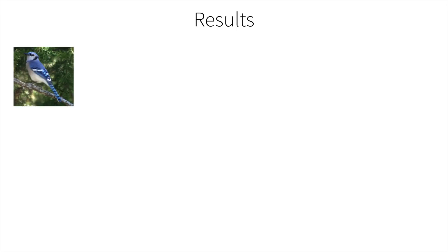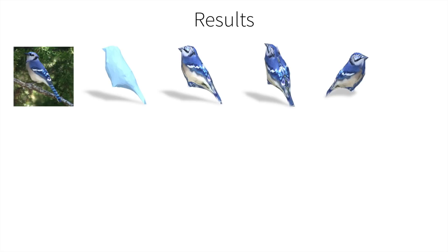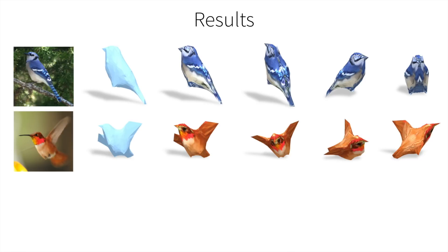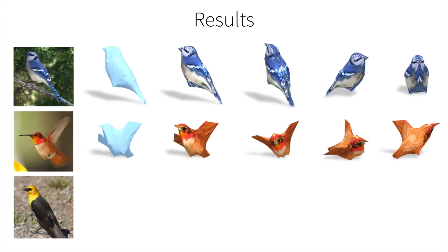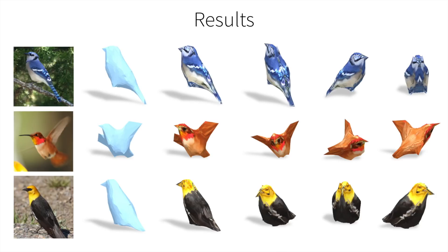Now we show results of the trained model on test images. Given an input image, we can infer its shape and texture. Here we show results from multiple views. Our model also captures different shapes, such as wings and different types of tails.